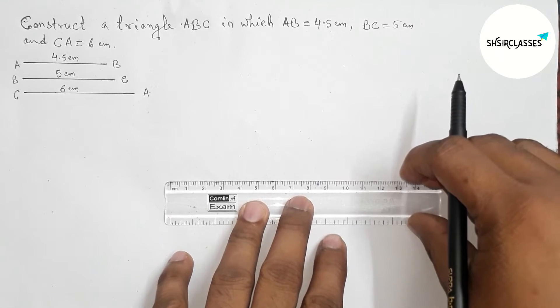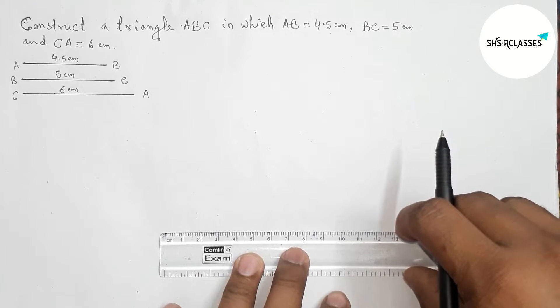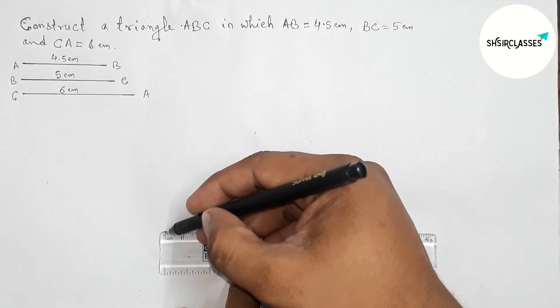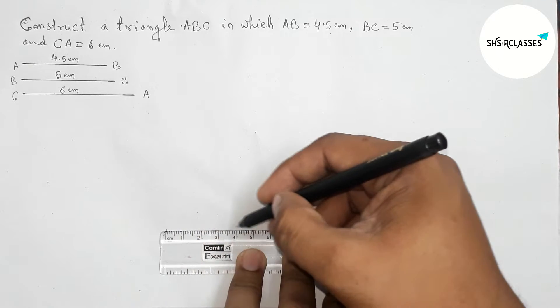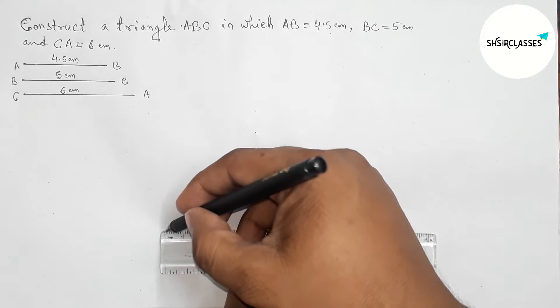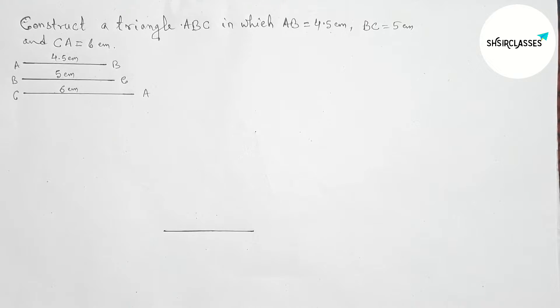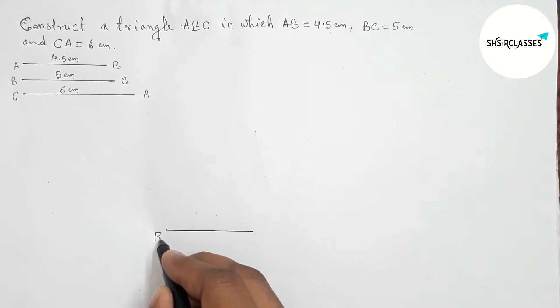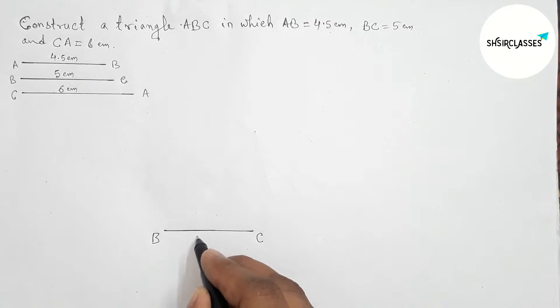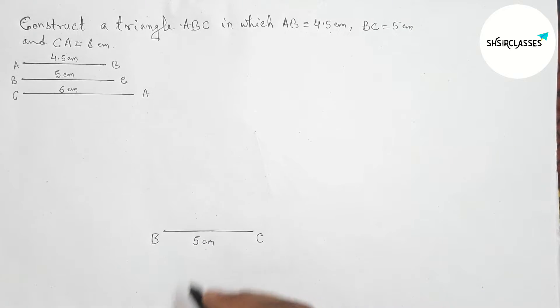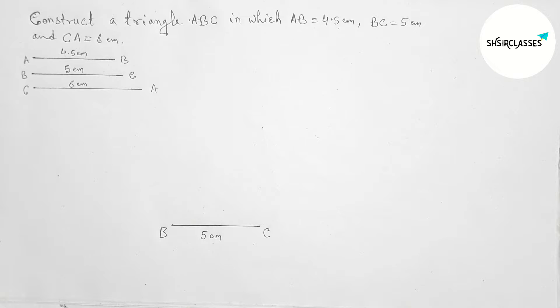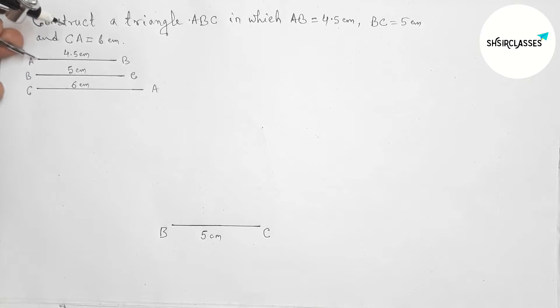So now I am going to use these three given sides to construct this triangle ABC. First, drawing BC equal to 5 centimeter line segment. Taking point here B and C, and this is 5 centimeters. Next, taking the length AB equal to 4.5 centimeters.